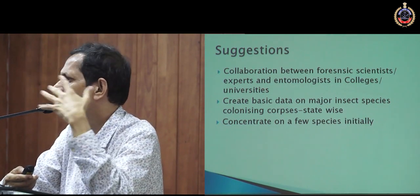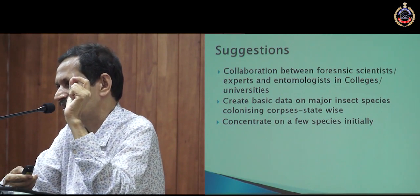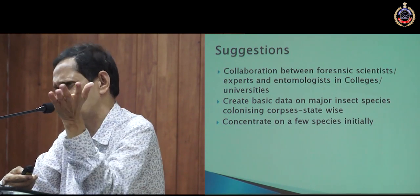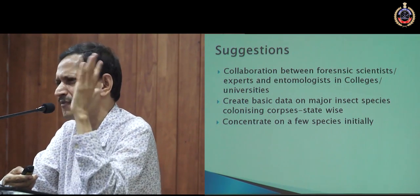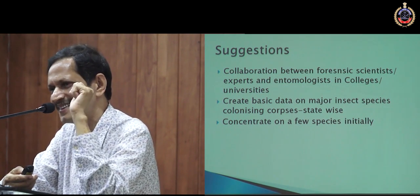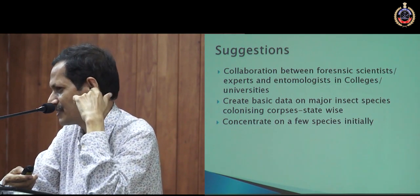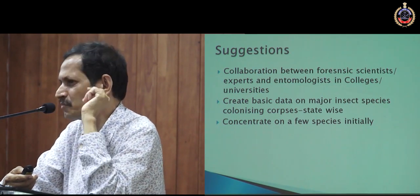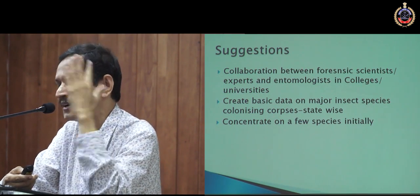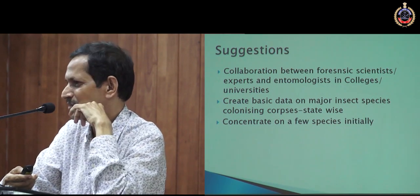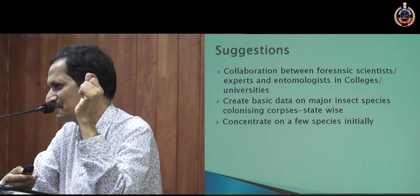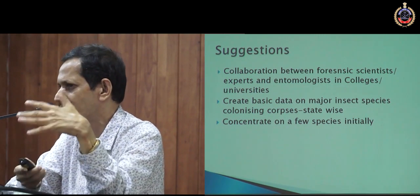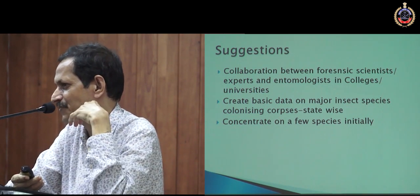At least we can start developing basic data about the insects. Take Kerala for example — study the few species that invade corpses. Start with the major species. The biology should be studied properly and the growth of larvae should be studied under controlled environments at different temperatures. You should have data: at 20 degrees Celsius, what is the period of development; at 25 degrees, what is the development period. Americans started this maybe 50 years back, and now they have very good data. Somebody interested can collaborate with the nearest universities or colleges.